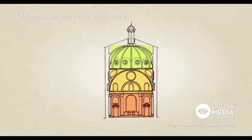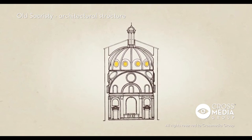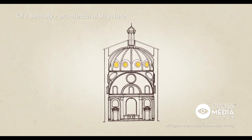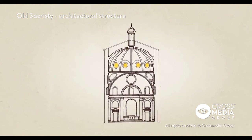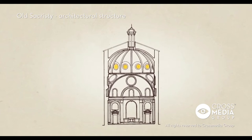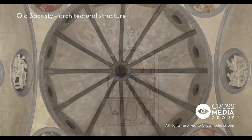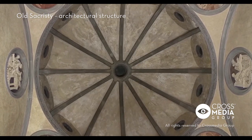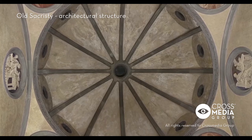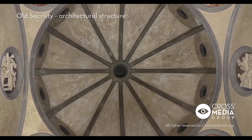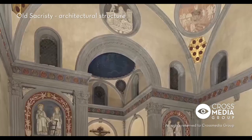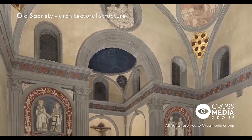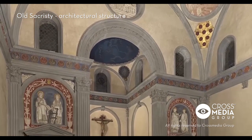The overall harmony of the sacristy — which came to be known as the old sacristy after Michelangelo designed another one, symmetrical to and inspired by Brunelleschi's work — made it the core of the architect's intervention and the model for a series of family chapels. And it was thanks to this first work that Brunelleschi won the commission to remodel the complex.